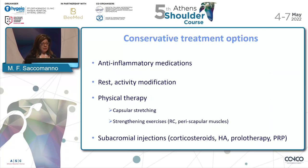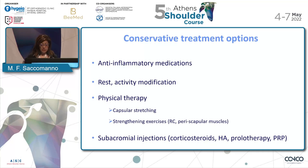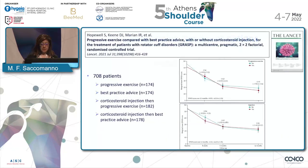Our treatment options include anti-inflammatory medication, rest, and activity modification. The mainstay is physical therapy, mainly based on capsular stretching — especially when overhead athletes are involved and there is restriction of internal rotation deficit — and strengthening of the rotator cuff as well as periscapular muscles. Besides physical therapy, subacromial injections are another interesting option.